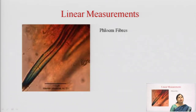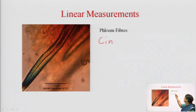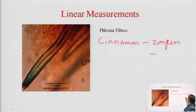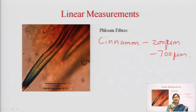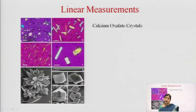Another example is phloem fibers, which are generally found in barks, stems, or roots. These phloem fibers have a particular length. For example, in cinnamon — which is dalchini — the fiber length ranges from 200 micrometers to 700 micrometers. When we get a powder of cinnamon, we can easily determine whether the given fiber belongs to cinnamon or some other adulterated drug.